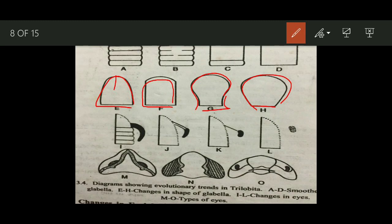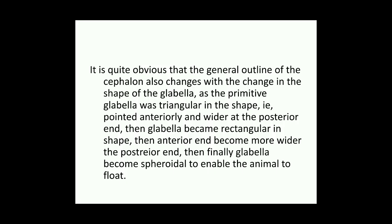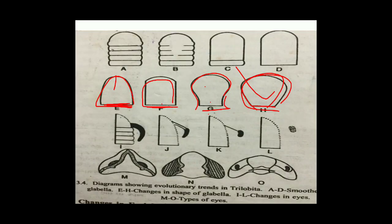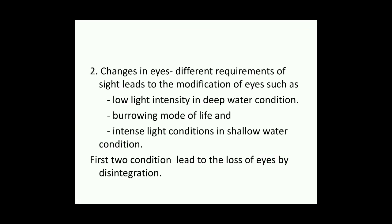This smoothening of the glabella leads to a change in the entire outline of the cephalon. The outline changed from a triangular shape, then to an oblate shape, then to a spheroidal shape. In the final stage, the anterior end becomes wider than the posterior end. The spheroidal shape helps it float more efficiently.